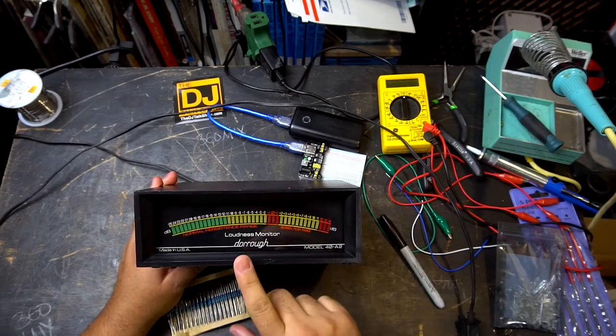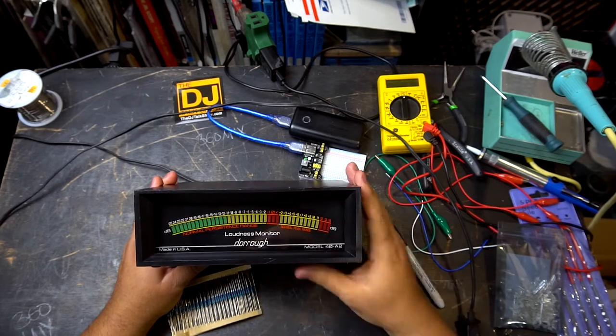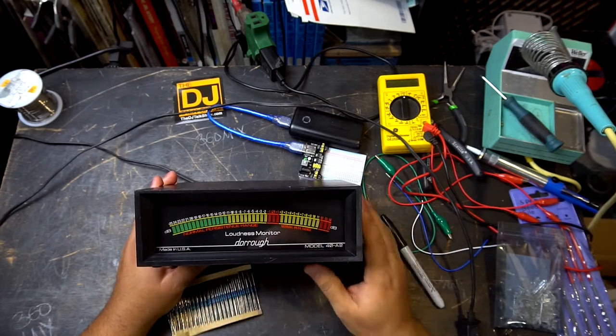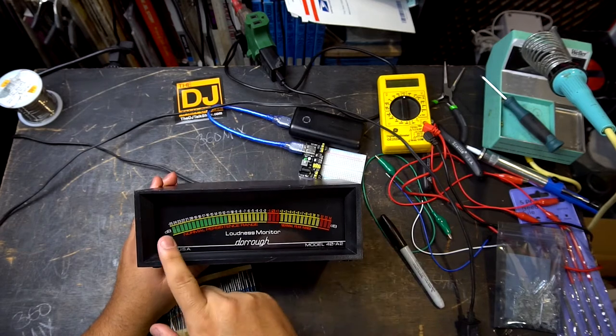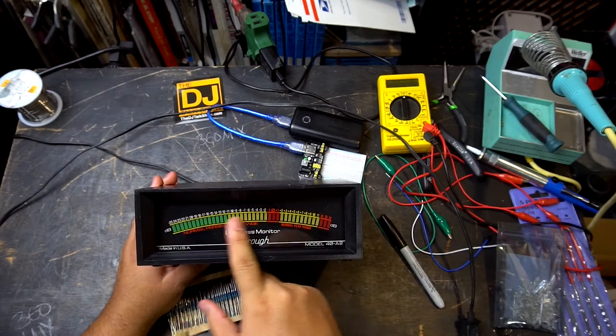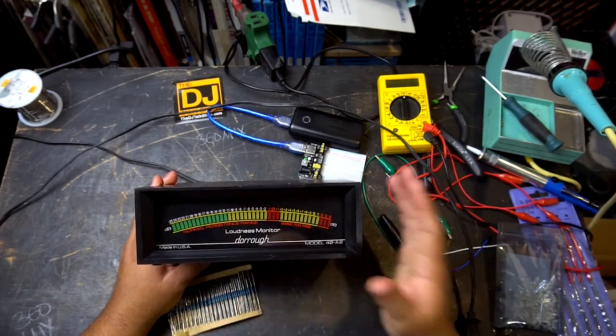I've always wanted this unit. It's a loudness monitor made by Darrow, made here in United States. Really cool stuff, and this unit right now has LEDs that you see on the panel.